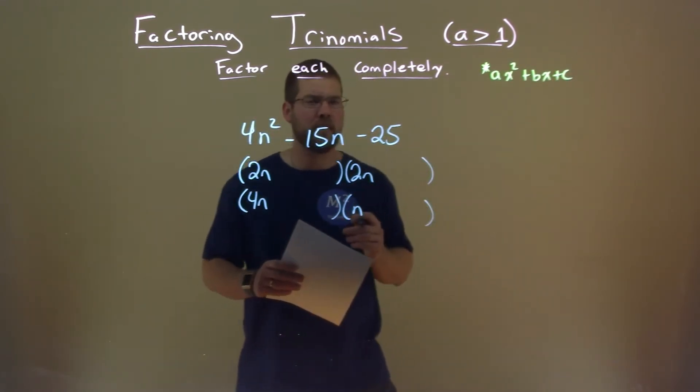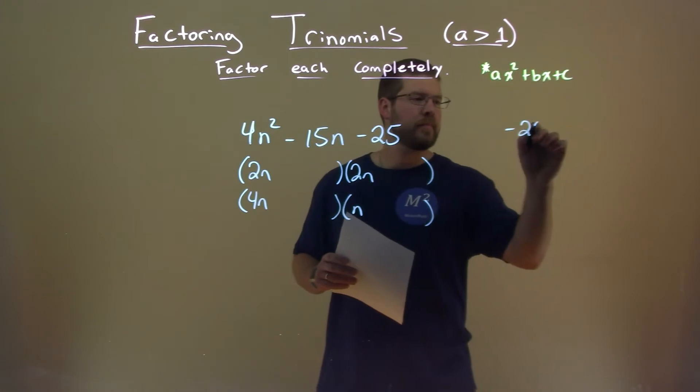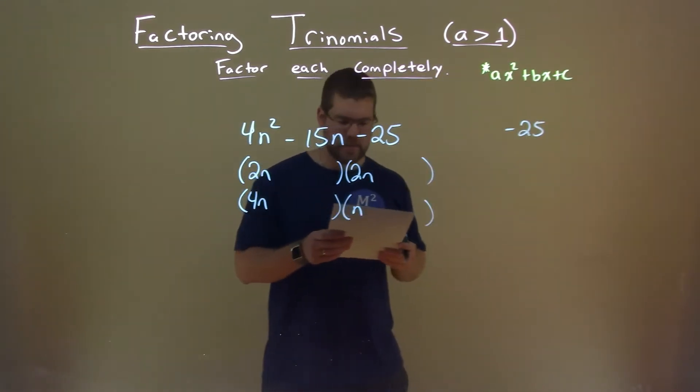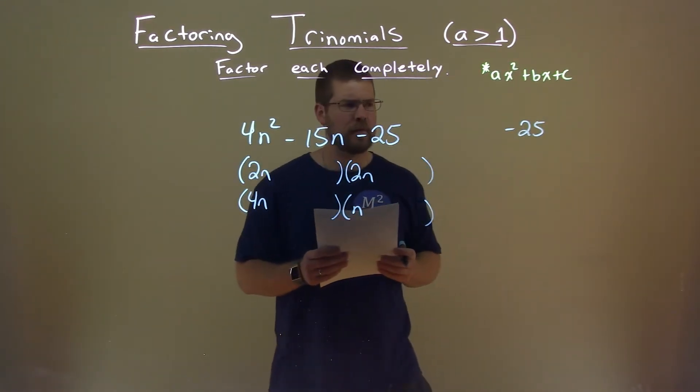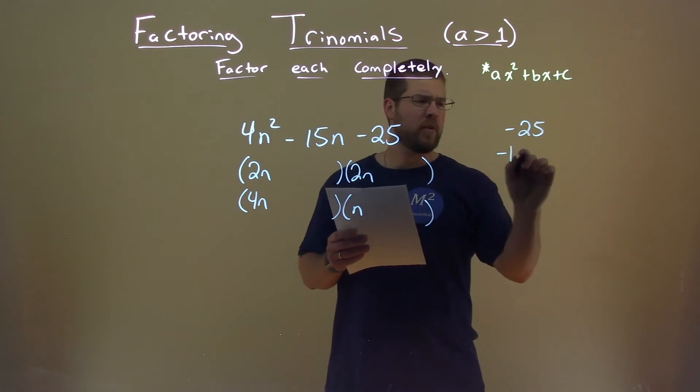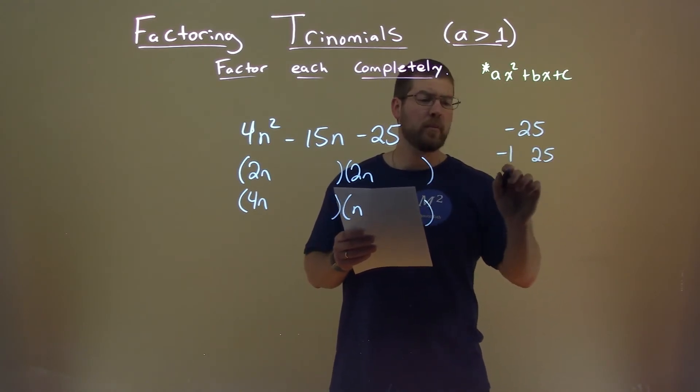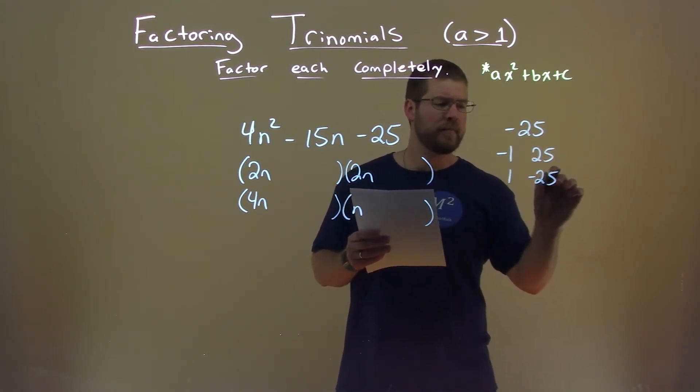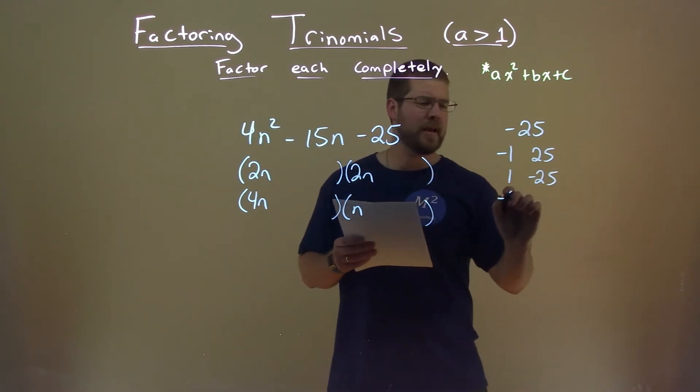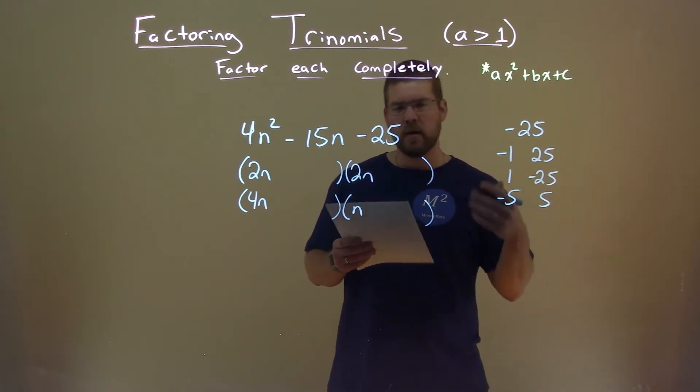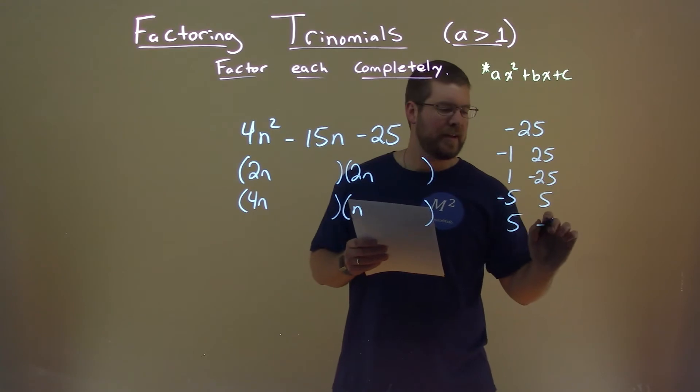Let's look at negative 25, the c value. What two numbers multiply to be negative 25? That's going to be negative 1 and positive 25, or positive 1 and negative 25. Also, we have negative 5 and positive 5, or 5 and negative 5.